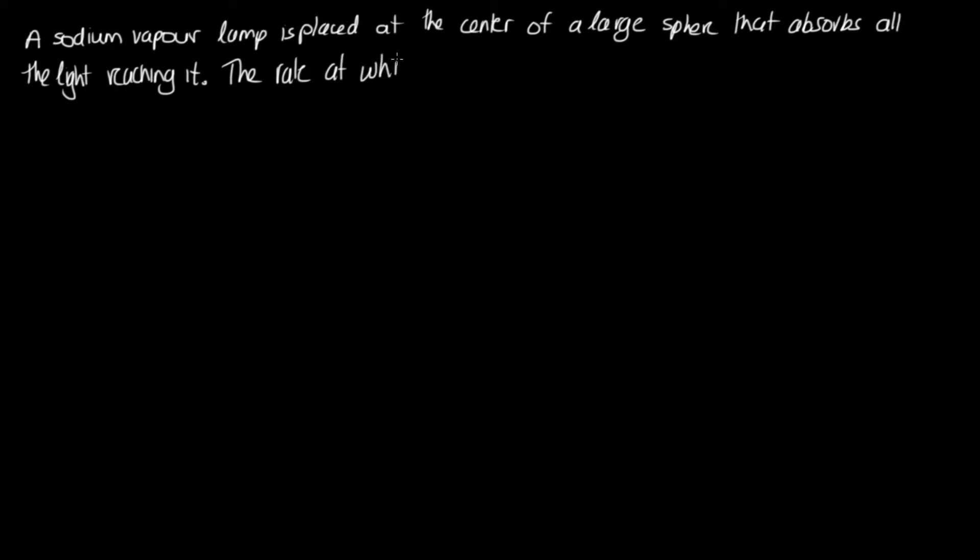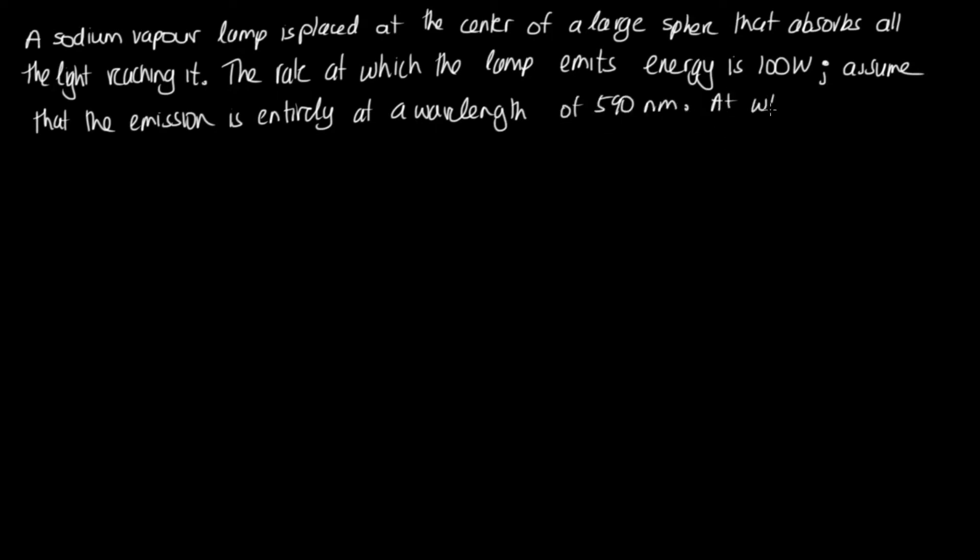Okay, so the first thing we need to be able to do is calculate the amount of energy that a photon can have. All the rules that you've learned so far about the relationship between the energy, the power and the intensity still hold. So let's do a worked example now. Okay, so the question is, a sodium vapour lamp is placed at the centre of a large sphere that absorbs all the light reaching it. The rate at which the lamp emits energy is 100 watts. Assume that emission is entirely at a wavelength of 590 nanometres. At what rate are photons absorbed by the sphere?